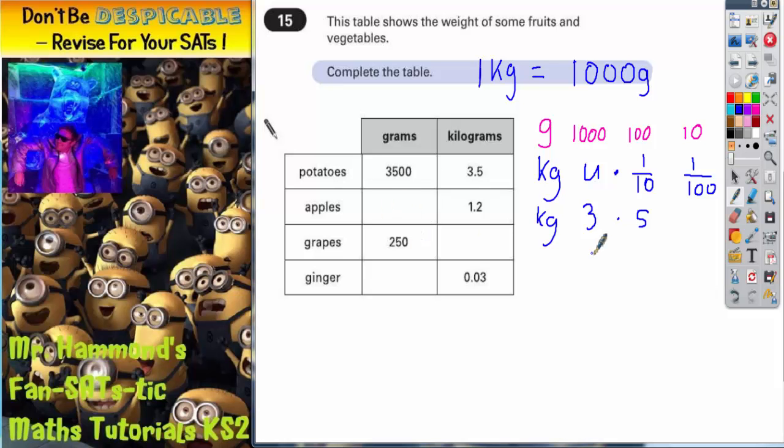Now if we look at apples, which is 1.2, we've got 1.2 kilograms. That's one in the thousands column and two in the hundreds. So it's 1,200. So this one here is 1,200 grams.